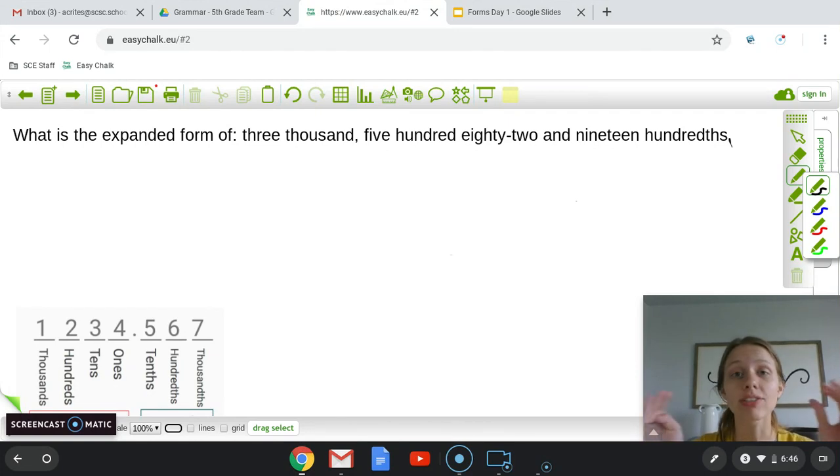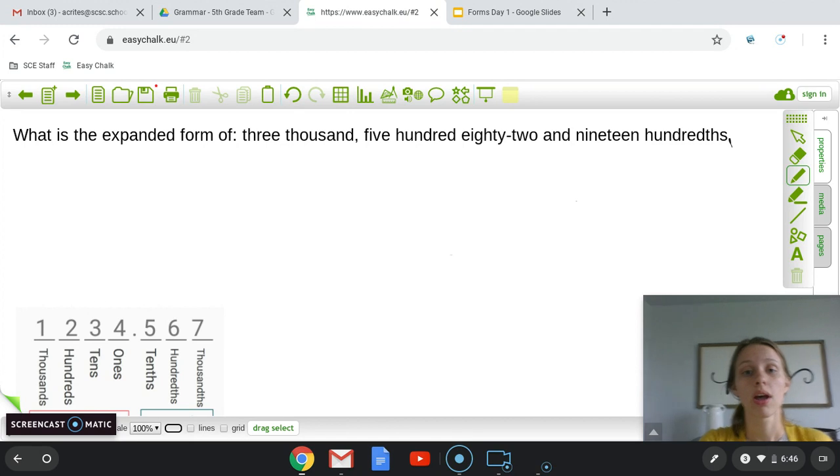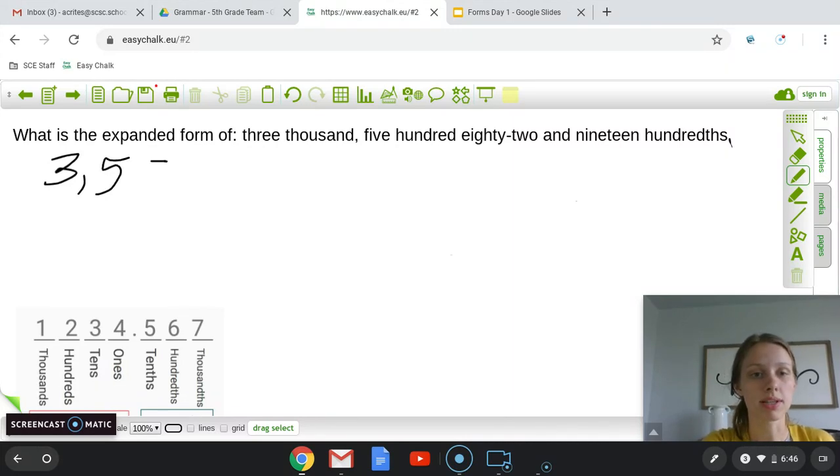So this one says the expanded form of 3,582 and 19 hundredths. First, I know we have to put this in standard form first. That is going to make it so much easier. So let's do that. 3,000... I know after by 1,000, I'll put a comma. 582. Easy peasy. 582 and 19 hundredths. So I know this is tenths. This is hundredths. So that's where my number's going to end. That's how I'll put 19 hundredths.